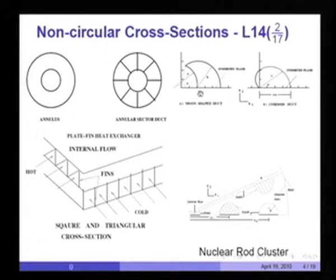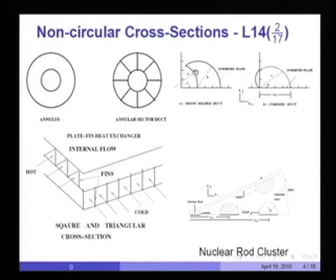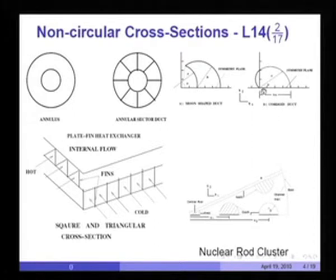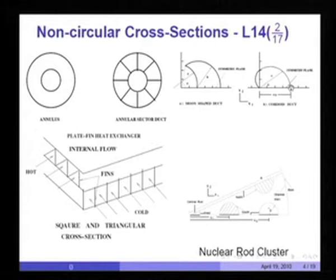Here is an example of a duct which is moon-shaped. What is shown here is a half section of the moon, with the x-axis being the symmetry axis. This is the inner edge of the moon and this is the outer edge. Likewise, there are ducts which are of cordoid shape, where the x-axis represents the symmetry plane and this is the outer boundary of the cordoid duct.